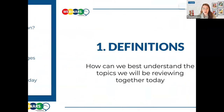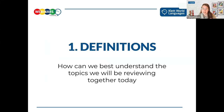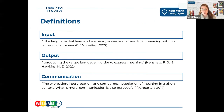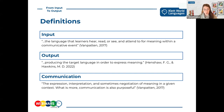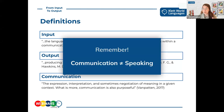The three definitions I want to quickly review are input, output, and communication. Input is the language that learners hear, read, or see and attend to for meaning within a communicative event. Output is producing the target language in order to express meaning. Communication is the expression, interpretation, and sometimes negotiation of meaning in a given context - and it is also purposeful. Communication does not equal speaking; it can include speaking, but the two terms are not synonymous.